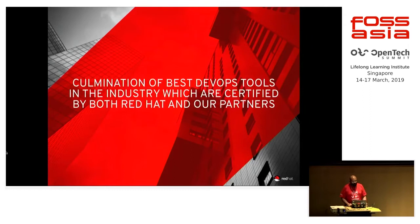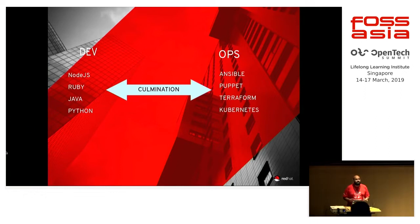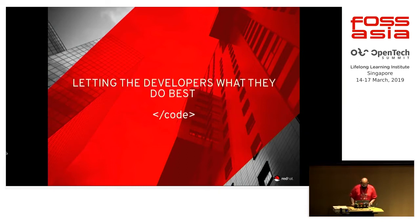At Red Hat we have the culmination of some of the best DevOps tools in the market, and they are both certified by Red Hat and our partners. DevOps is development and operations culminated together in a single package. Whether you are a Node.js, Ruby, or Python developer, you need to integrate it with your operations — for example, Kubernetes, Ansible, or any other operations model. At OpenShift you get a one-stop shop for everything DevOps. OpenShift lets the developer do what they do best, which is code.